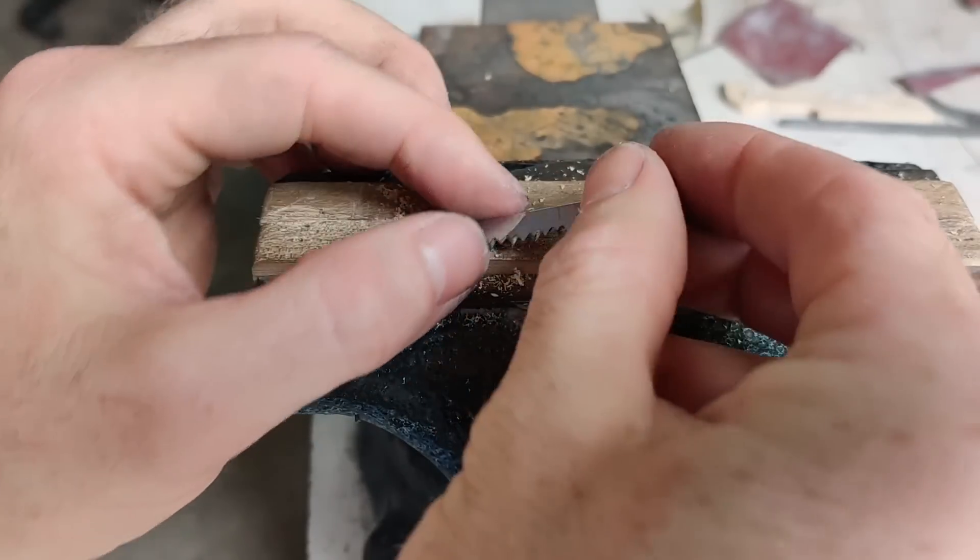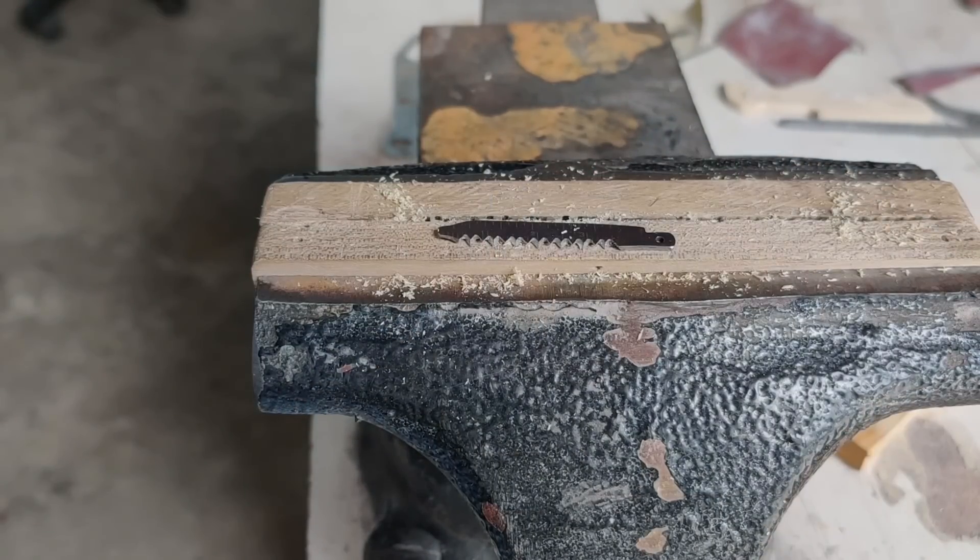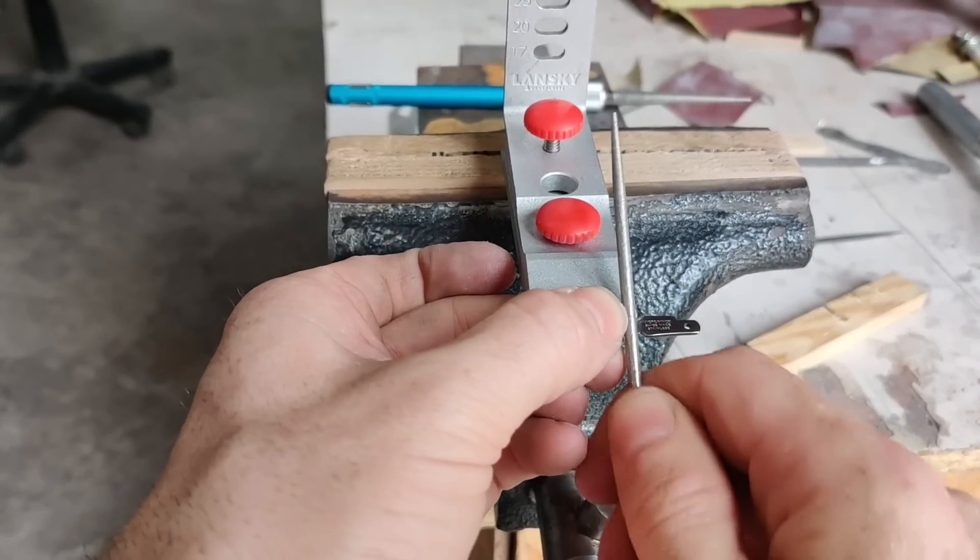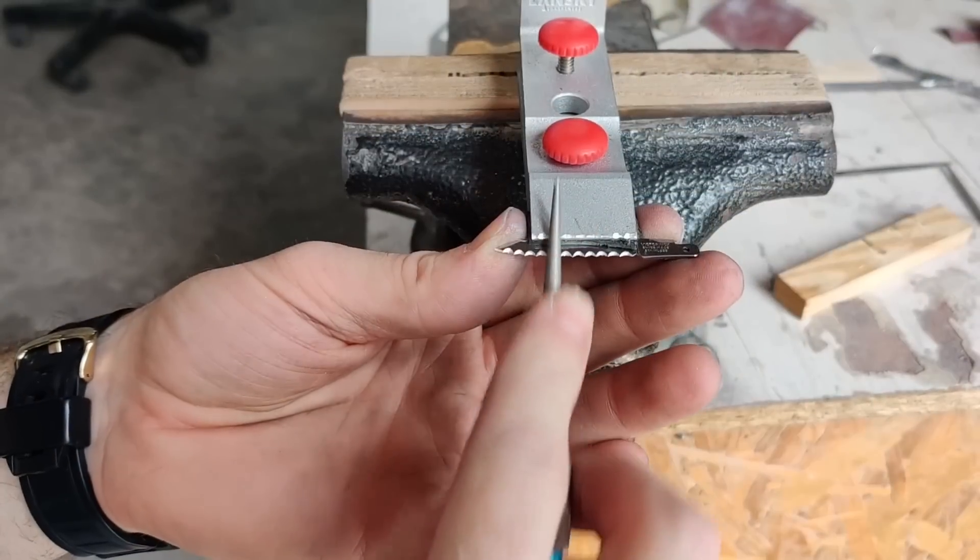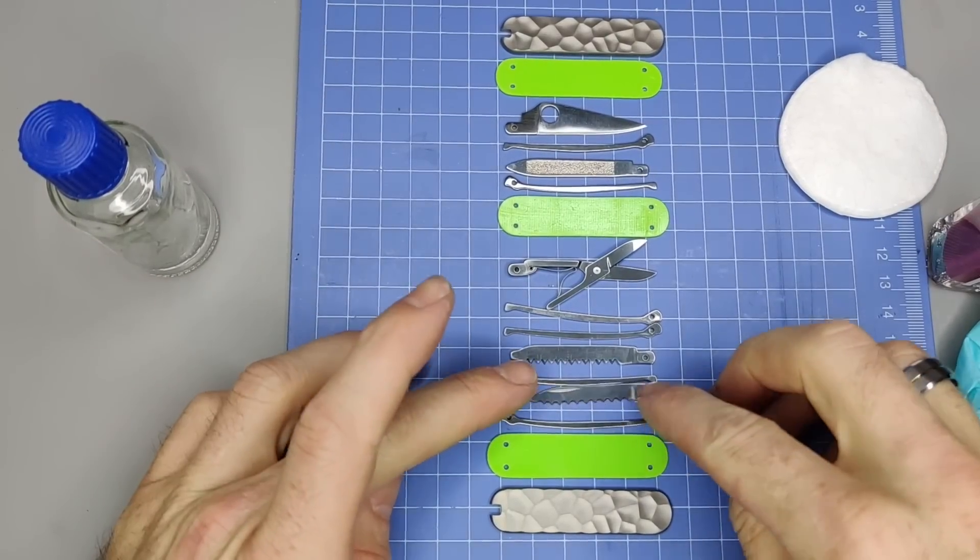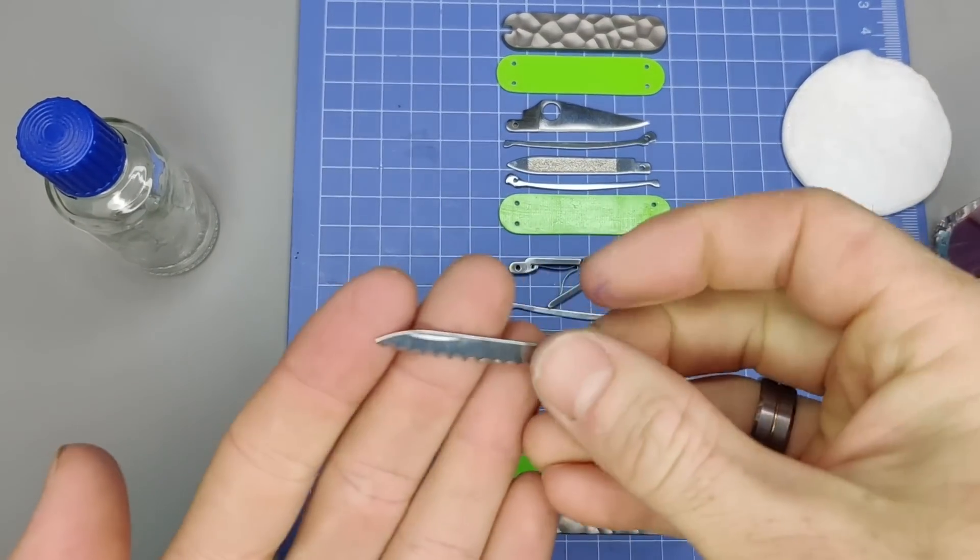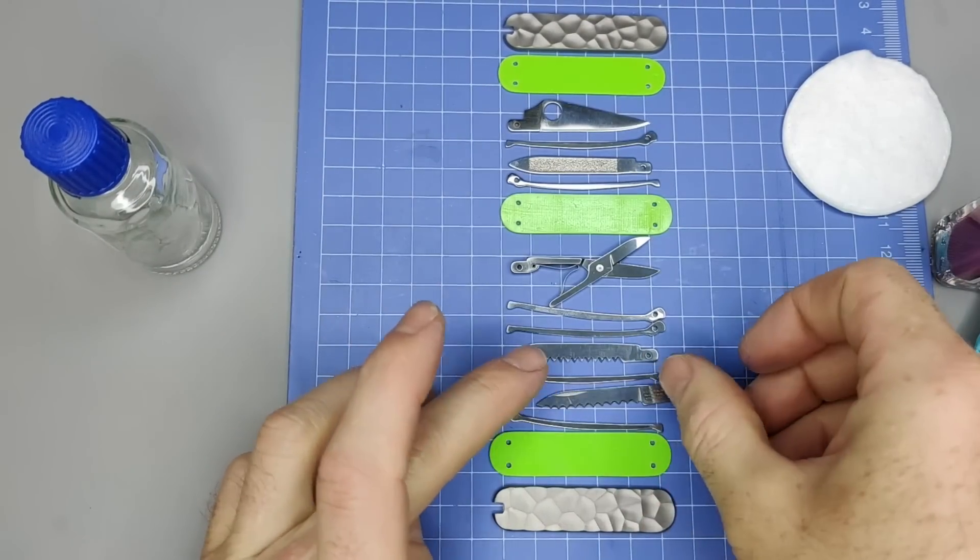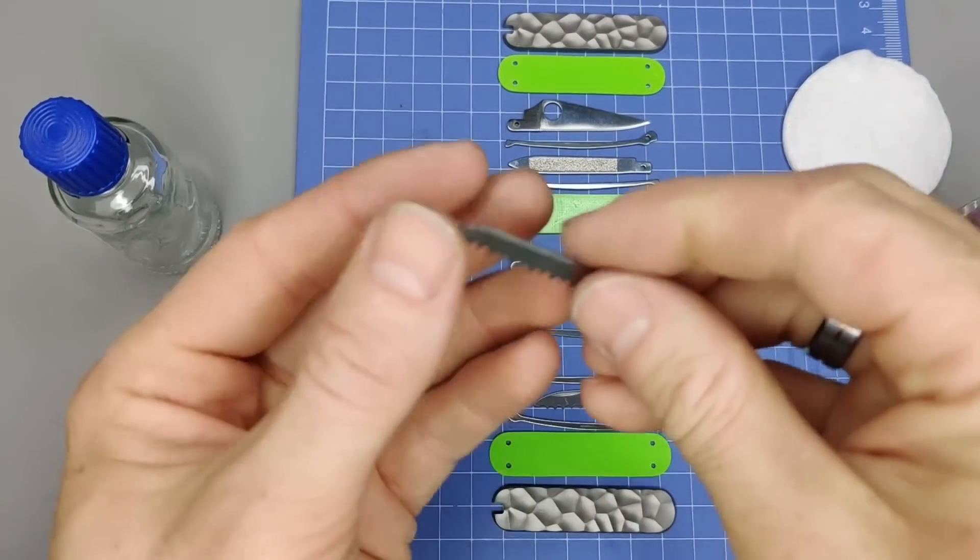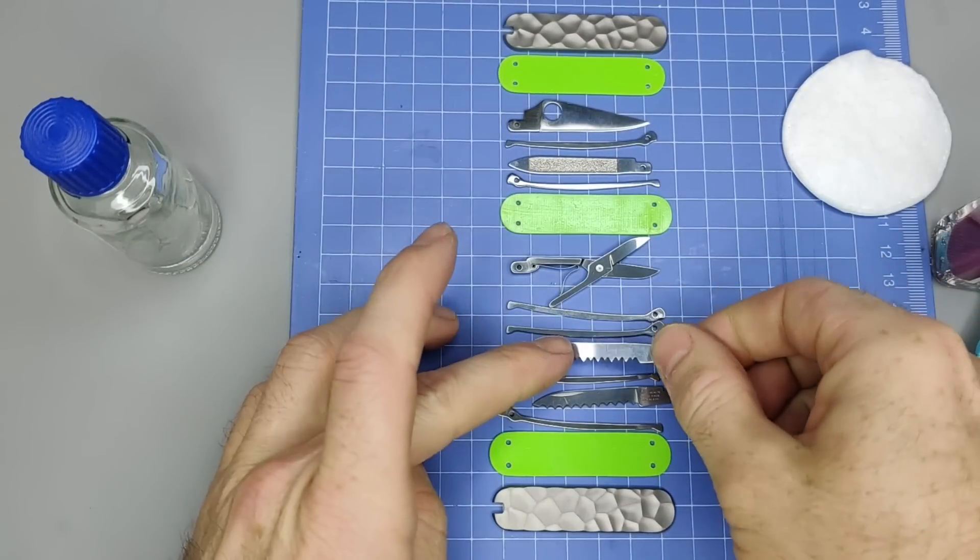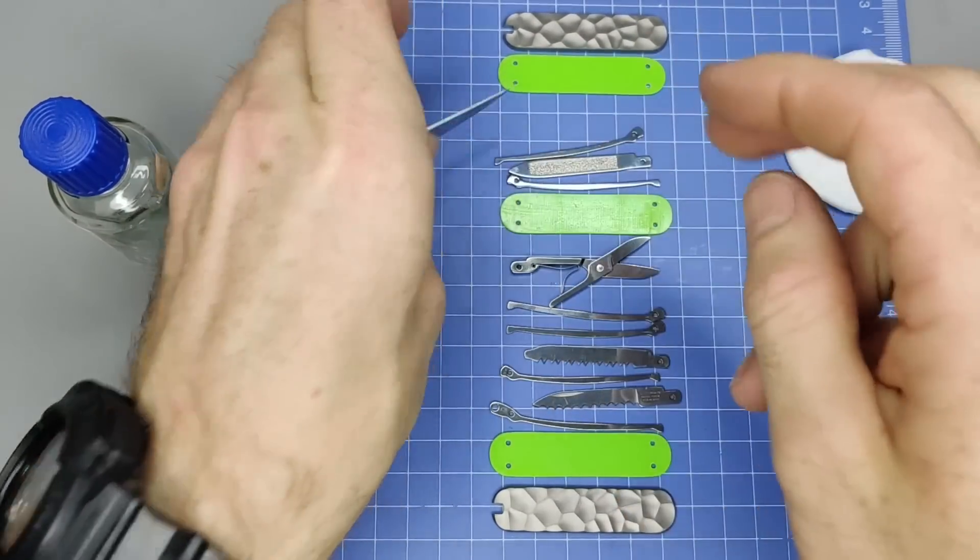Alright, so now let's do the serrated blade next. And we'll be done with the modding. Alright, so I finished up all the modifications. So here's our serrated blade. Here's the saw. And here's our Spyderco.